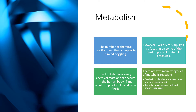When it comes to metabolism, the number of chemical reactions and their complexity is mind-boggling. I will not describe every chemical reaction — time would stop before I could even finish. However, I will simplify it by focusing on the most important metabolic processes. There are two main categories: catabolic reactions, in which molecules are broken down to release energy, and anabolic reactions, in which energy is used to construct complex macromolecules.